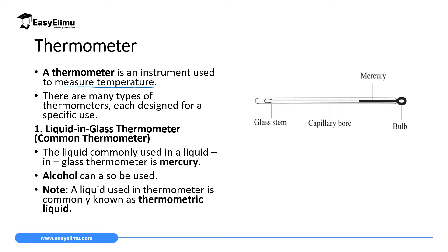There are many types of thermometers and they are designed for specific use. We have thermometers used in hospitals, which we call clinical thermometers. We have common thermometers used in laboratories. We have Six's thermometers used in weather stations to measure maximum and minimum temperatures. And then we have another important thermometer which we call a bimetallic thermometer — remember we discussed thermal expansion and bimetallic strips.